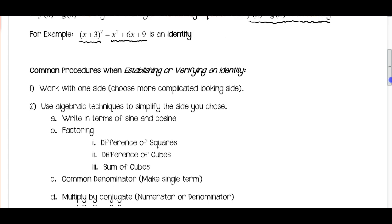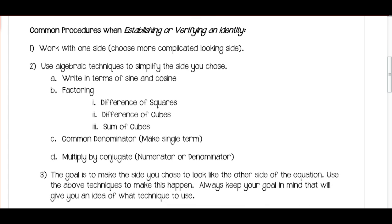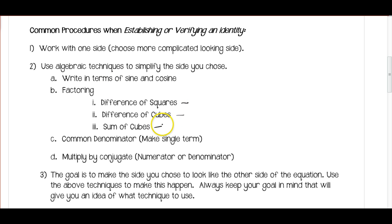So when we're doing trig identities, some common procedures to keep in mind: we're going to work with one side, and we normally choose the more complicated side. We're going to use algebraic techniques to simplify the side you choose. Some of these techniques are writing in terms of sine and cosine, factoring — so we've got difference of squares we'll use a lot, difference of cubes and sum of cubes we'll use a little. You may want to go back and review what those are. Finding common denominators, which we've done a little bit.